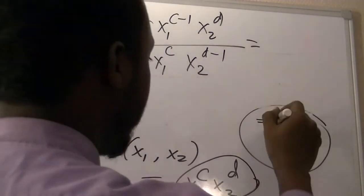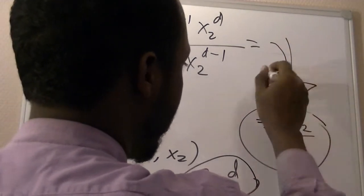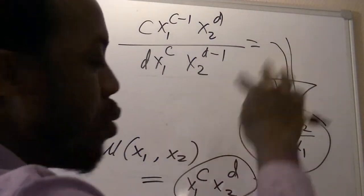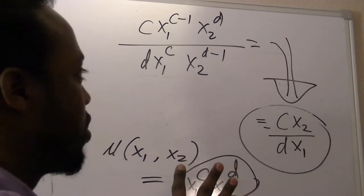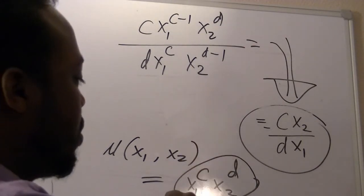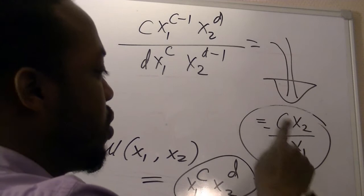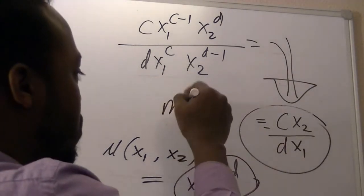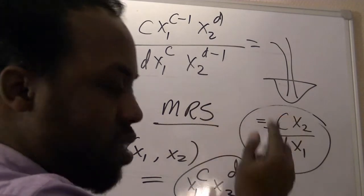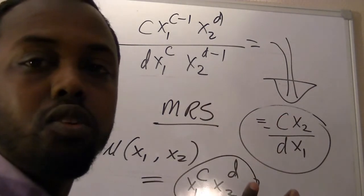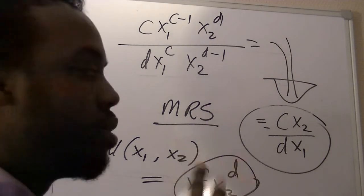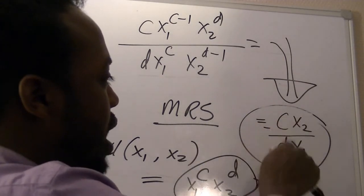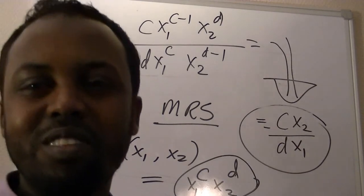And after rearranging this, we arrive the same as before. Which means, no matter how we represent this utility function, whether it's a logarithmic representation or exponential representation, the marginal rate of substitution we get is the same. So, the marginal rate of substitution is independent of the utility representation and only depends on the ratio between the parameters and the quantity of the goods. I hope this was useful.